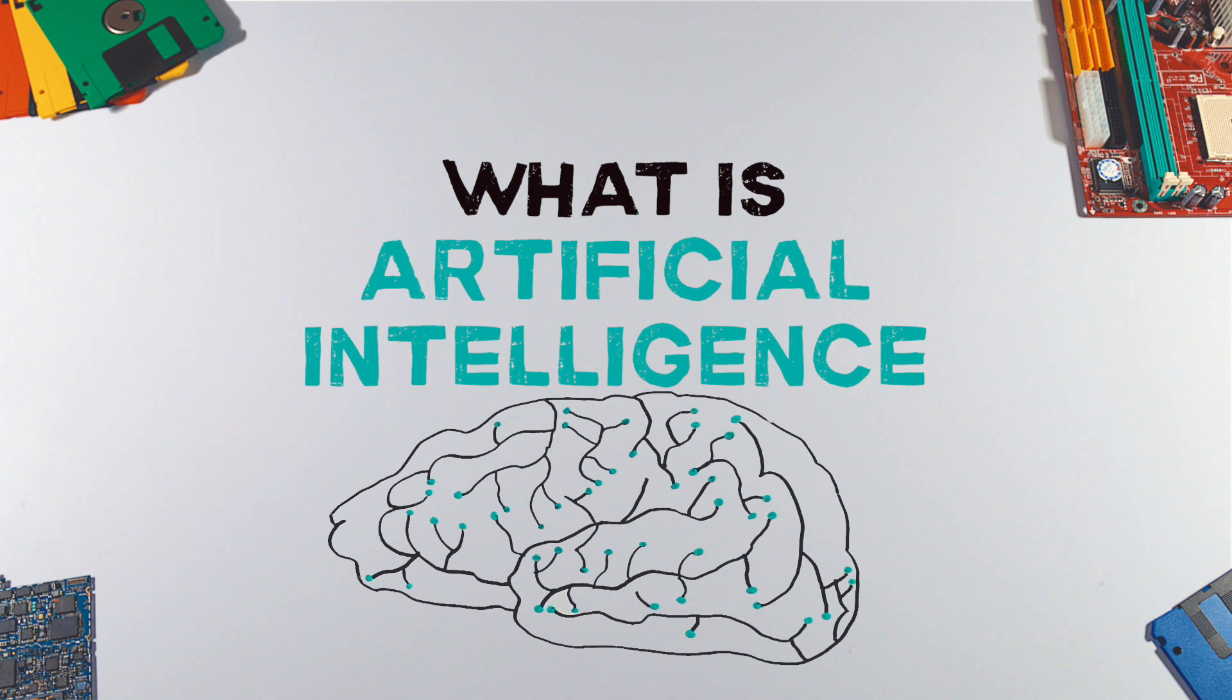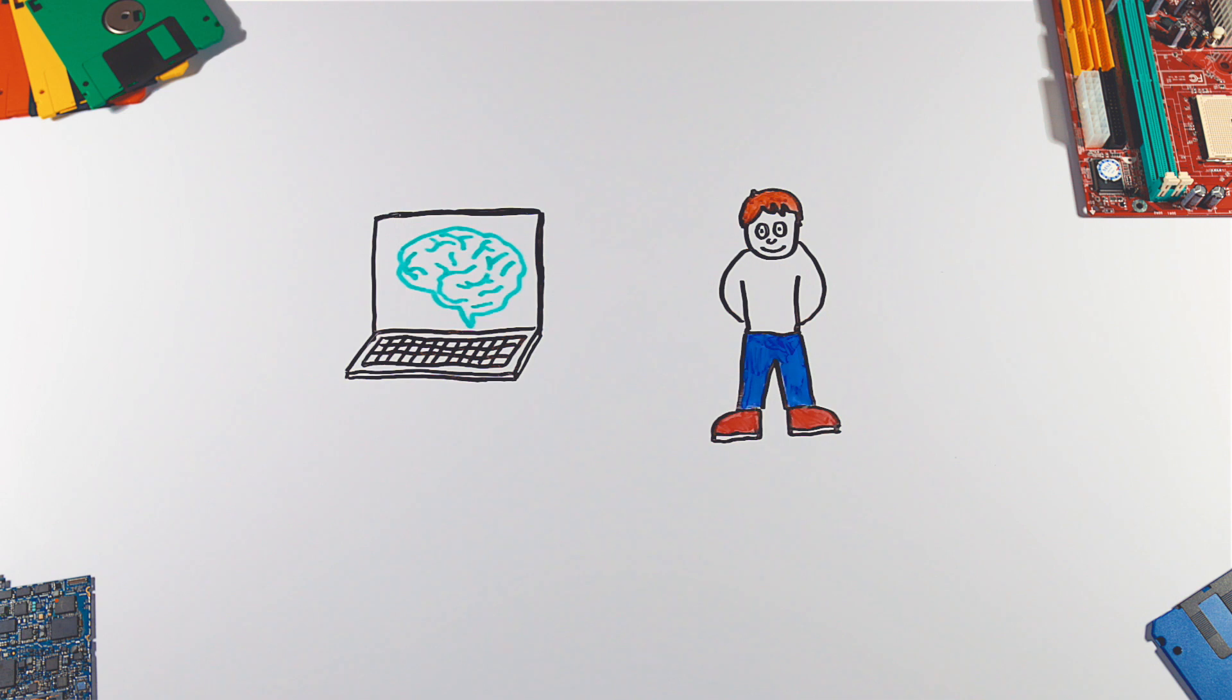When you talk to Siri or Alexa, you're talking to artificial intelligence. But what is artificial intelligence? Artificial intelligence, or AI, is intelligence displayed by machines such as computers in a way similar to us humans. It's able to observe its environment, learn, and solve problems.